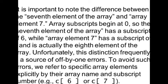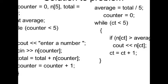It is important to note the difference between the 7th element of the array and the array element 7. The 7th element has index 6, while array element 7 has index 7.